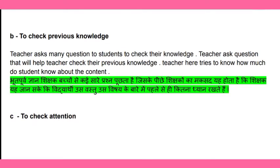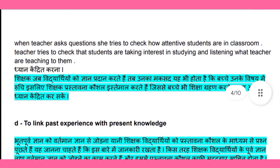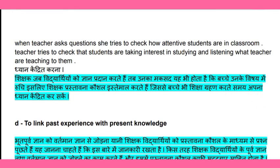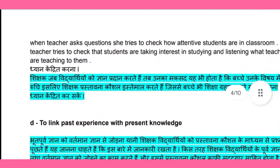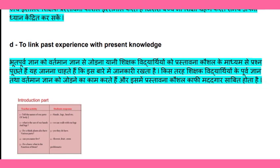Second objective is to check previous knowledge — the teacher wants to know what students are already aware of. Third is to check attention — the teacher asks a series of questions so students also become active in class. Last one is to link past experience with present knowledge — the teacher asks questions that students are already aware of to connect their past experience with present knowledge.